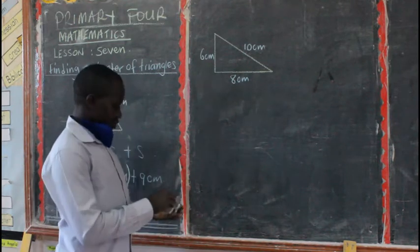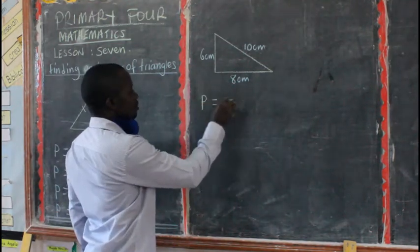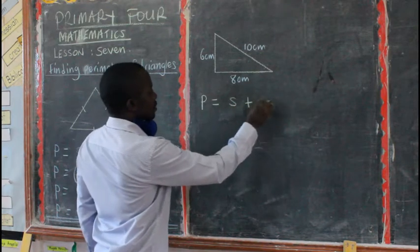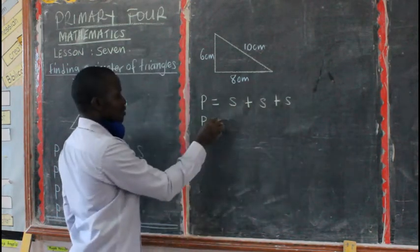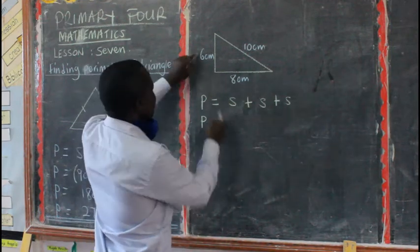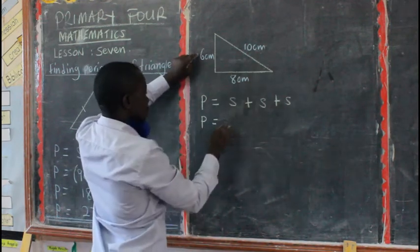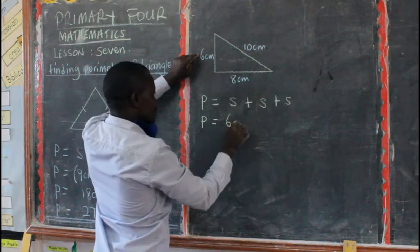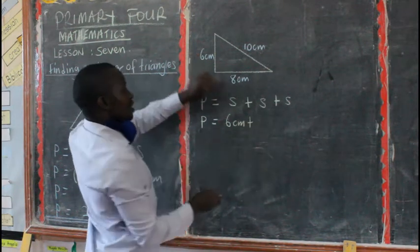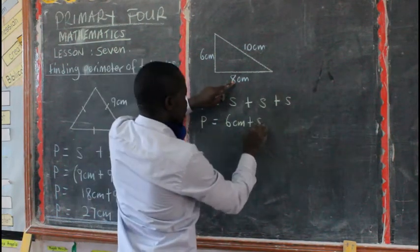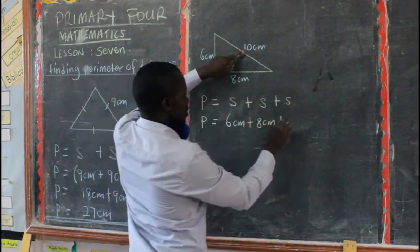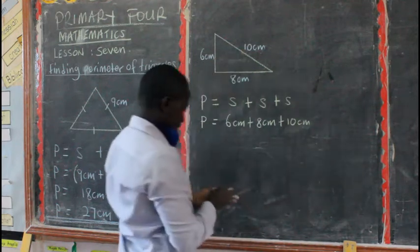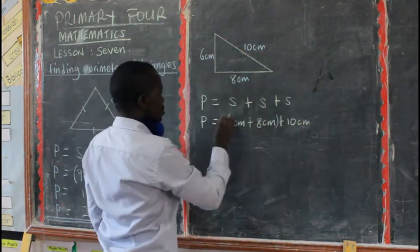Also, to find this perimeter, I would say that perimeter is equal to side plus side plus side. So perimeter is equal to, let's begin from here. This is now 6 cm plus 8 cm plus, then last here, 10 cm. Then yourself can add this too.